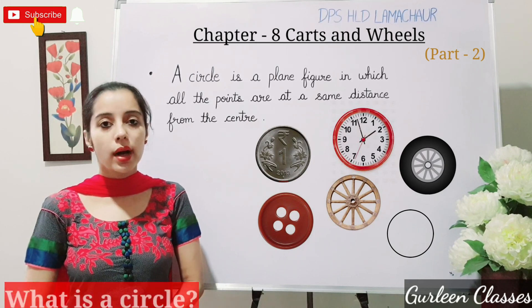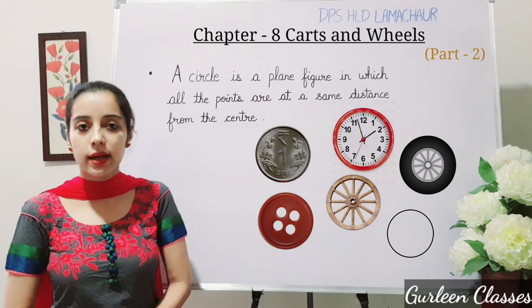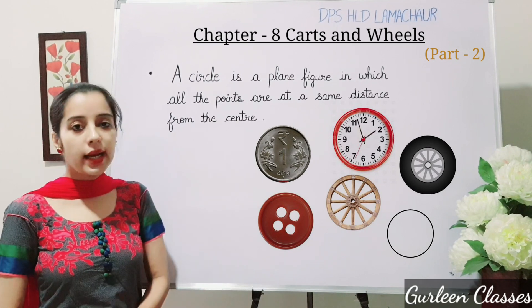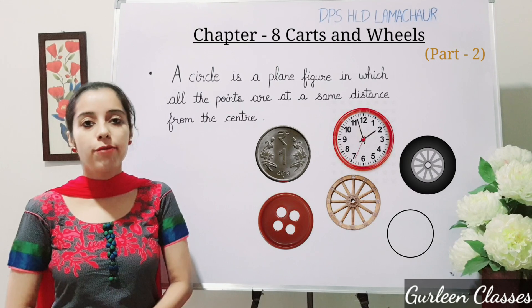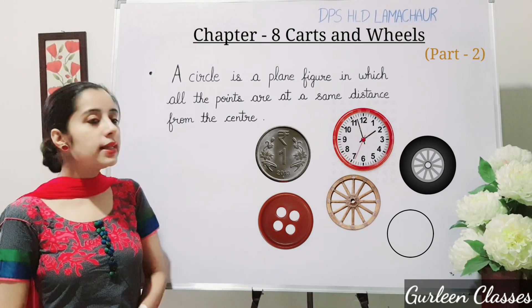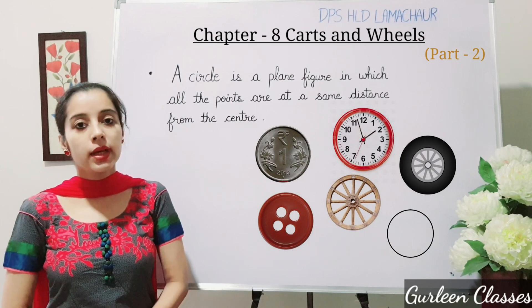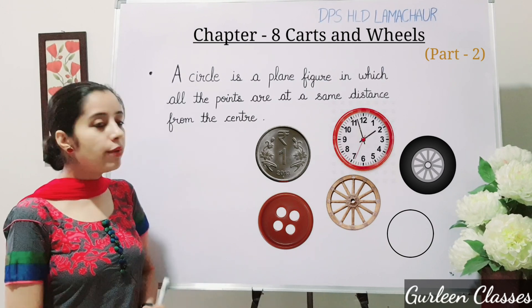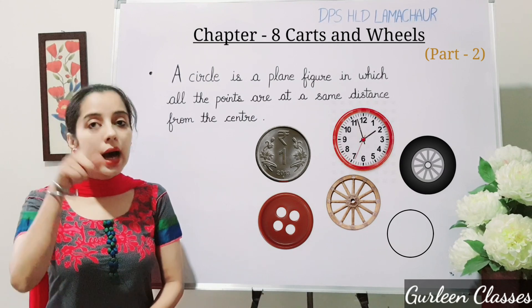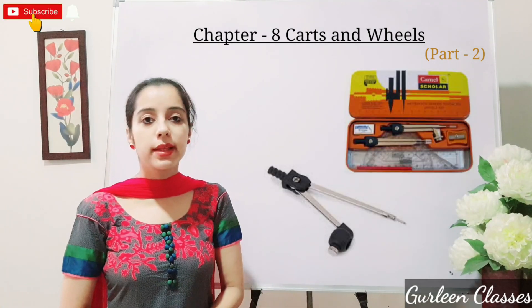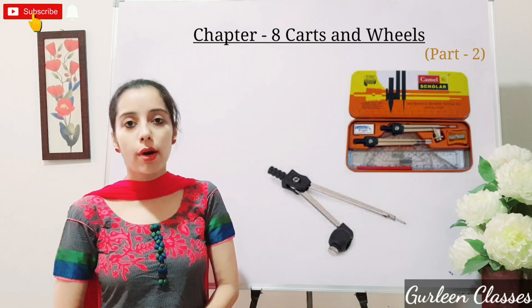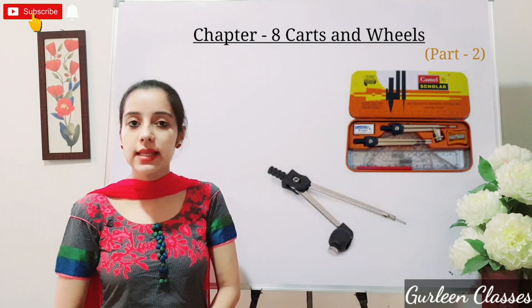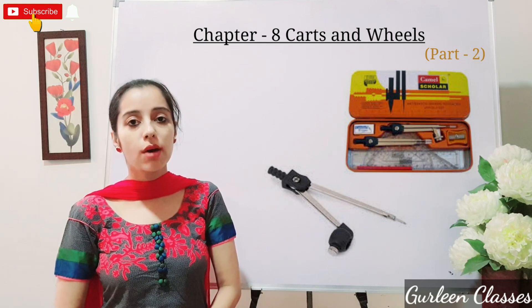So now let us revise what is a circle. A circle is a plane figure in which all the points are at the same distance from the center. So here are the examples of a circle. You can see a circle is a plane figure and it has no corners. It is in round shape. But a circle with a definite radius can be drawn with the help of compass contained in your geometry box.